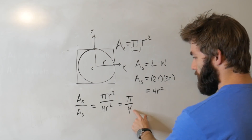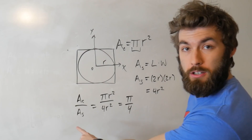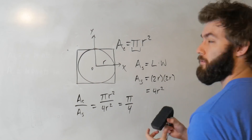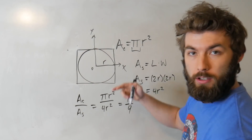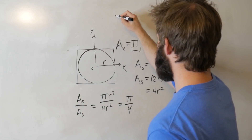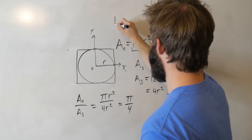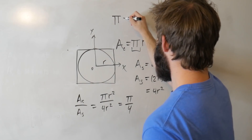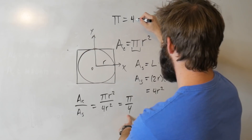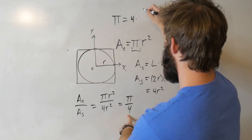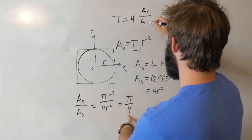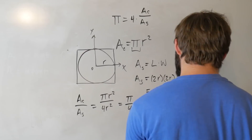Let's multiply this 4 over, and we're going to get a new expression. Pi is equal to 4 times the area of the circle divided by the area of the square.